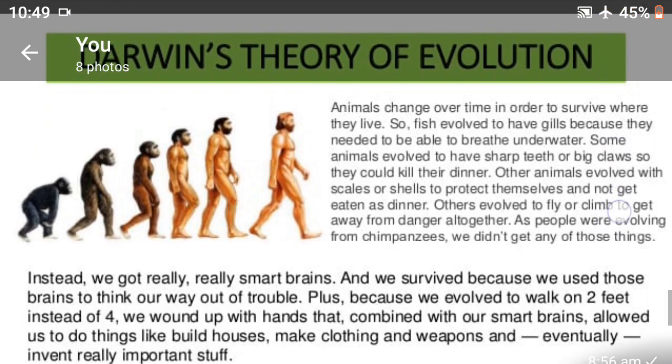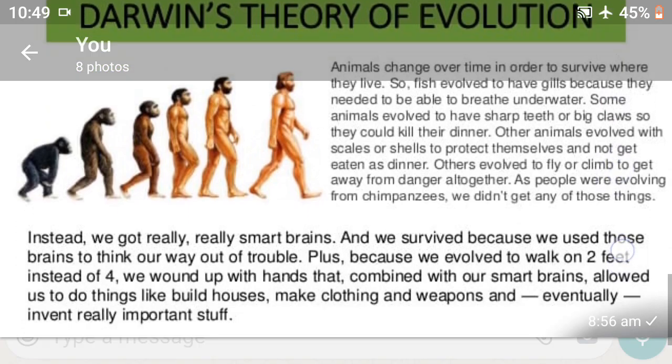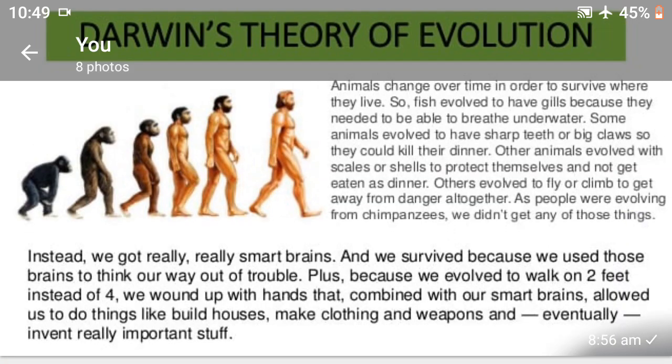Darwin's Theory of Evolution: We got really smart brains and we survived because we used those brains to think our way out of trouble. Plus, we evolved to walk on two feet instead of four. We are bound up with hands that, combined with our smart brains, allowed us to do things like build houses, make clothing and weapons, and eventually invent really important things.